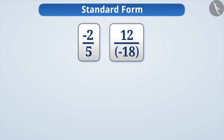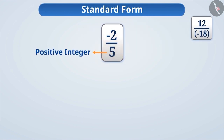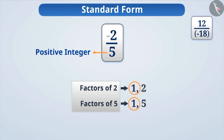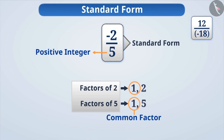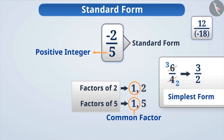There are two rational numbers here. One is minus 2 by 5 and the other is 12 by minus 18. The denominator of the first number is a positive integer. Further, ignoring the negative sign, there is no common factor other than 1 in the numerator and the denominator. If every rational number has a positive integer as the denominator and the numerator and denominator have only 1 as a common factor, then such a rational number is in its standard form. It is the same as the simplest form of a fraction.